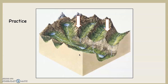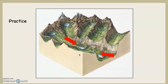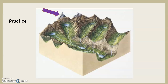Let's practice. What are the white arrows pointing at? The answer is arêtes. Now, what are the orange arrows pointing at? There are really two things: one is the tarn — you see the lake — and of course tarns are formed in cirques, so it's also pointing at cirques. What about the red arrows? Forget about the lakes — that area is the U-shaped valley or glacial trough. The blue arrows are pointing at hanging valleys. And the purple arrow? That would be a horn.